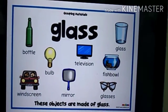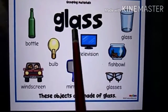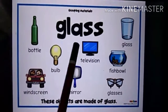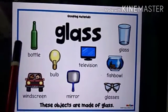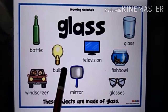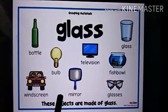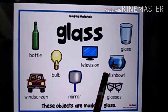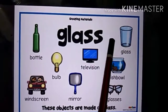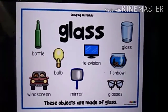The first material we are going to see is glass. Many things are made out of glass: bottle, windscreen, bulb, television screen, mirror, glasses, fish bowl, glass tumbler — all these objects are made of glass.